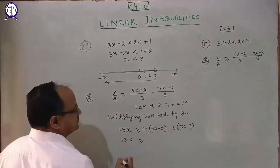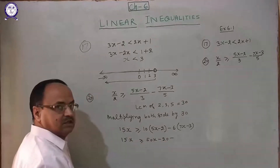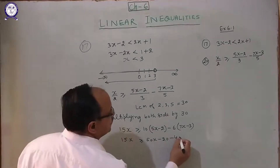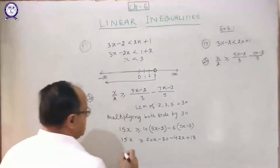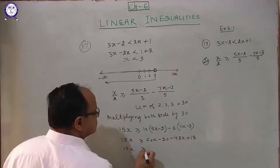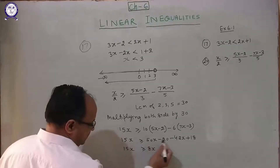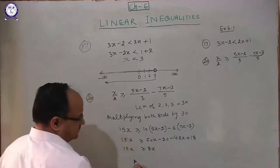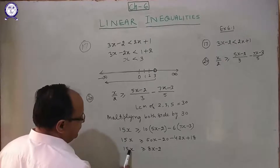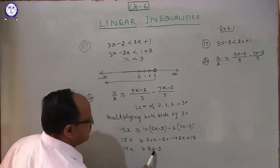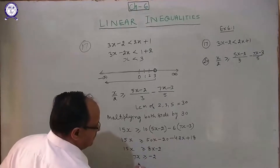So we have 15x ≥ 10x minus 20 minus (42x minus 18), which simplifies to 15x ≥ 50x minus 42x minus 20 plus 18, giving 15x ≥ 8x minus 2. Further simplifying: 15x minus 8x ≥ minus 2, so 7x ≥ minus 2.